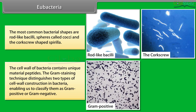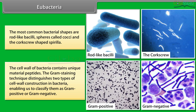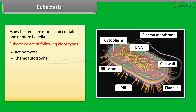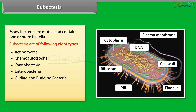The cell wall of bacteria contains unique material, peptidoglycan. The gram staining technique distinguishes two types of cell wall construction in bacteria, enabling classification as gram-positive or gram-negative. Many bacteria are motile and contain one or more flagella. Eubacteria are of the following eight types: Actinomyces, chemoautotrophs, cyanobacteria, enterobacteria, gliding and budding bacteria, Pseudomonas, rickettsias and chlamydiae, and spirochetes.